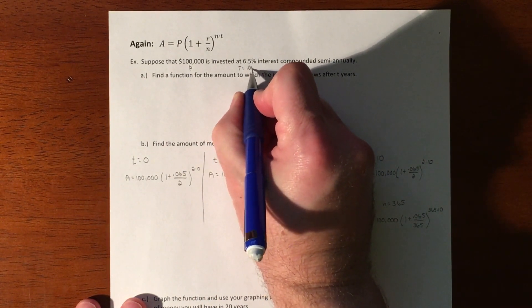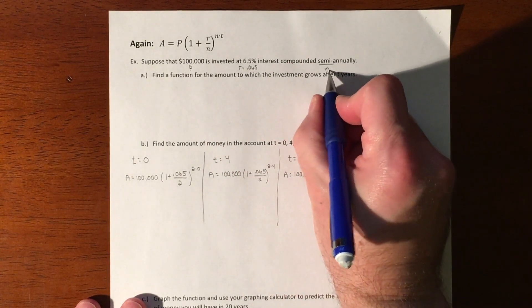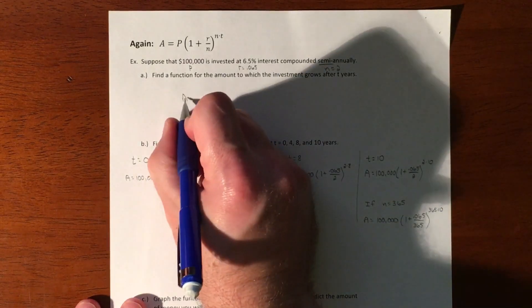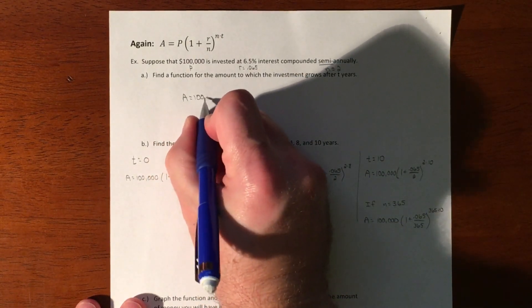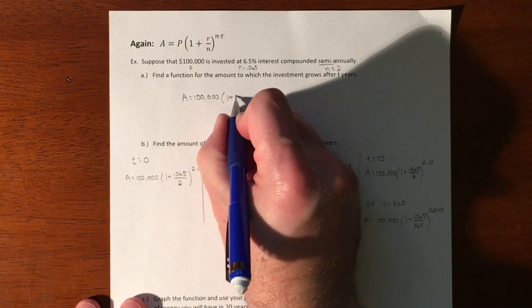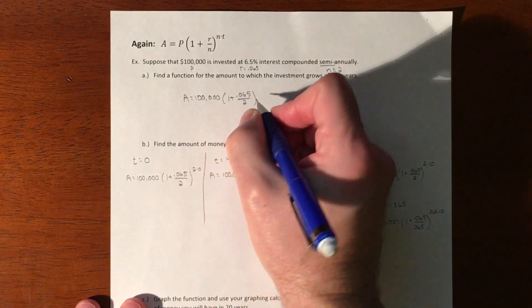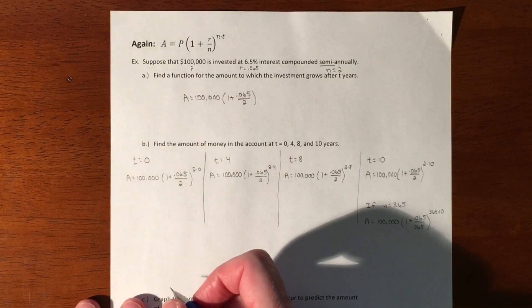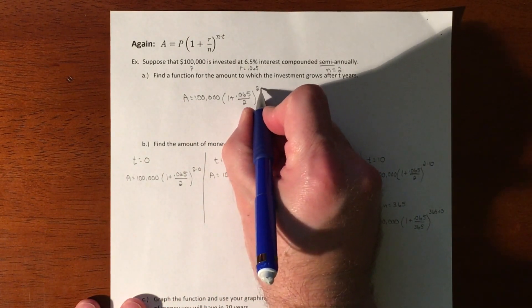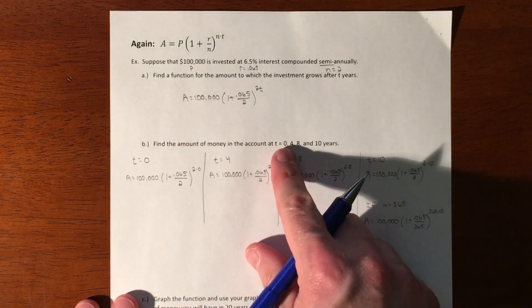...is 0.065, and compounded semi-annually so that means your n equals 2. Our formula is 100,000 times (1 + 0.065/2)^(2t) because it's compounded semi-annually, and then we have two times time. That is our formula.